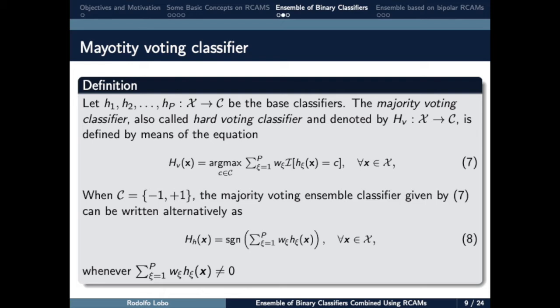In the bipolar case, the majority voting classifier can be written, alternatively, by equation 8.